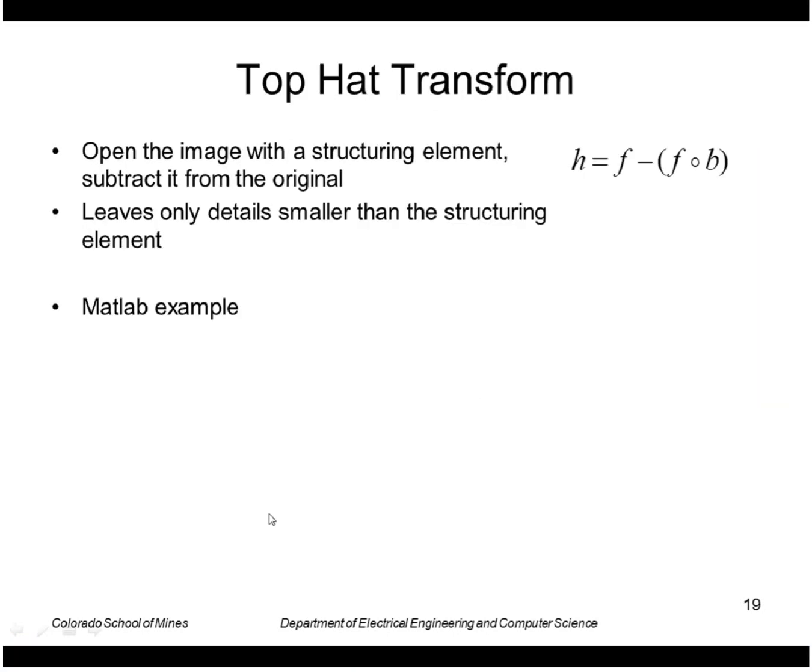Okay one final algorithm I'd like to look at is the top hat transform which is defined as opening the image and then subtracting it from the original. This leaves only details that are smaller than the structuring element. There's a nice example in Matlab that I'll show here in a second. First though just to see why this works.